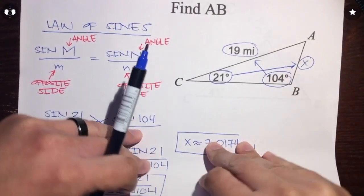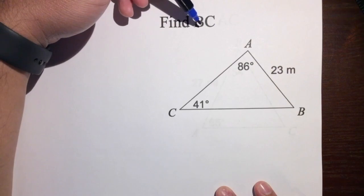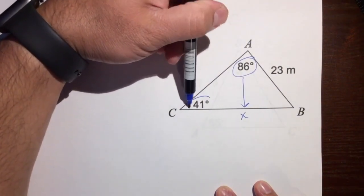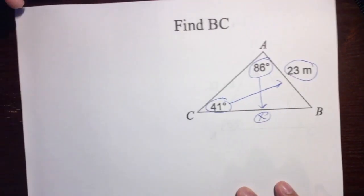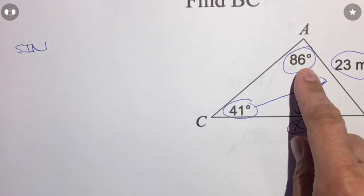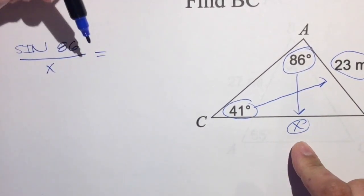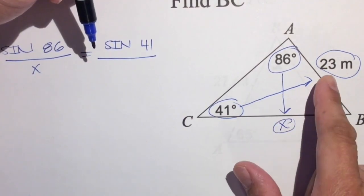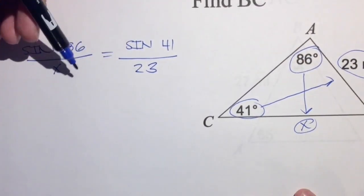Let's do another example — find BC. I'll call it X. We have an angle and its opposite side, and we have 41 degrees and its opposite side. It's not a right triangle, so we'll use the Law of Sines. Let's set it up: sine of 86 over its opposite side X equals sine of 41 over its opposite side, which is 23 meters.